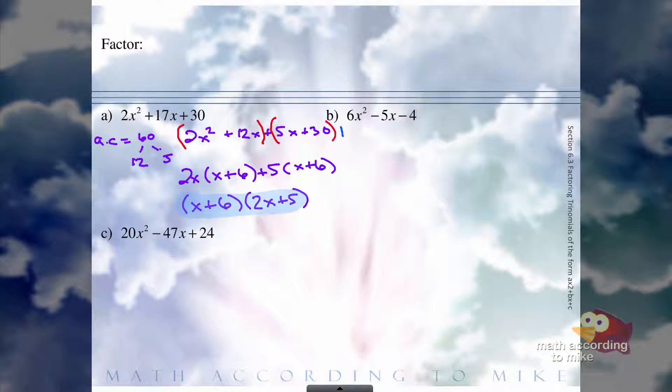Again, start off with a times c. Actually, what I should say is, what's the first thing you do in factoring? Always, always, you check that there's a GCF. And none of these on this slide have a GCF. If they did have a GCF, you'd have to pull it out first. So because of that, we go right to the a times c.